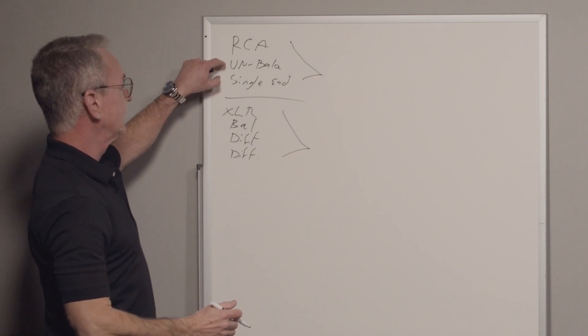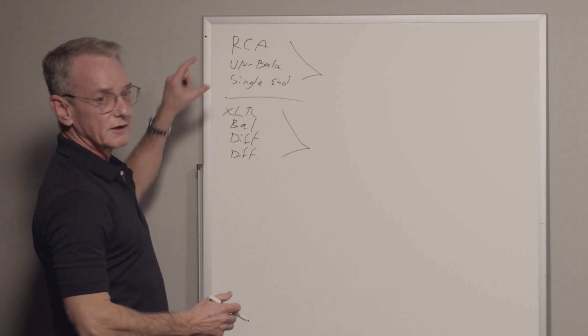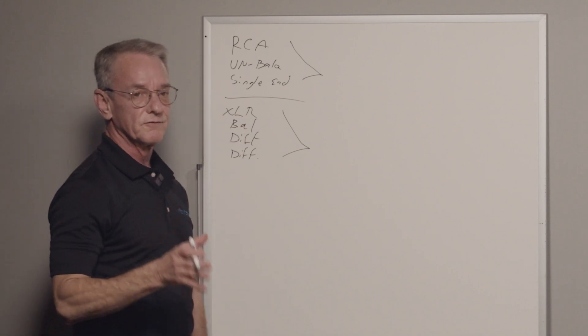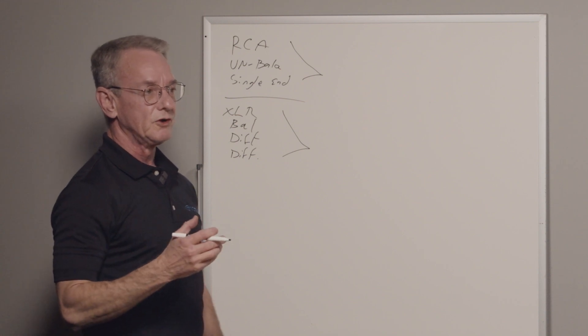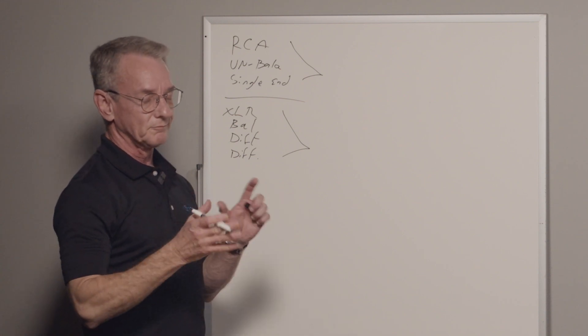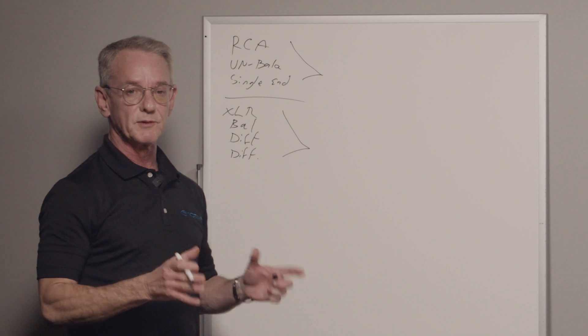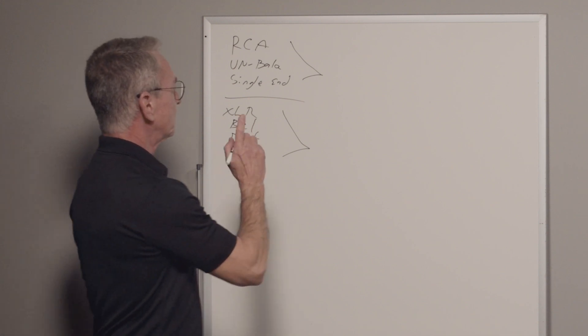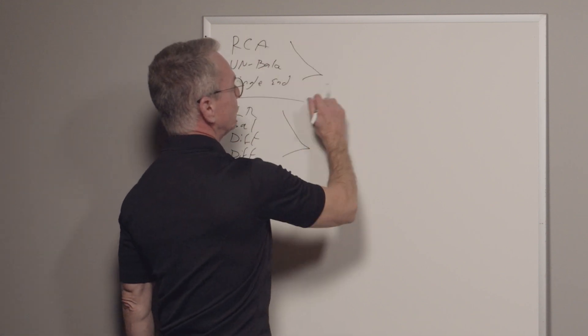When you're talking about RCA, unbalanced, single-ended, they all mean the same thing. The only reason that there are different terms is simply because they're used contextually in a different way depending on what it is you're talking about. But what all this boils down to is simply this.